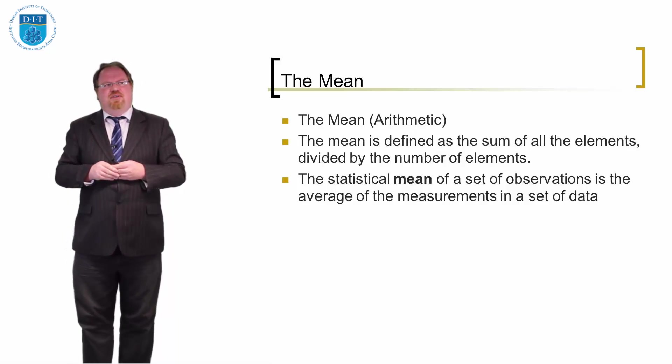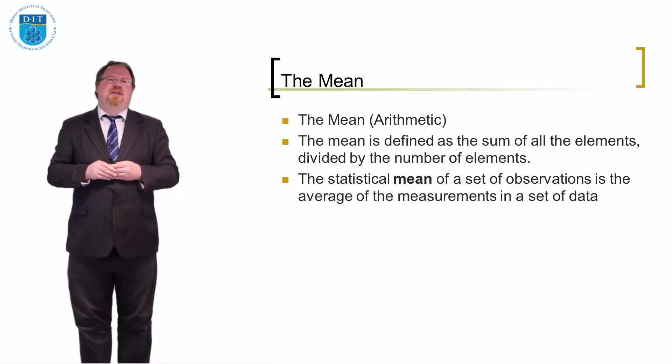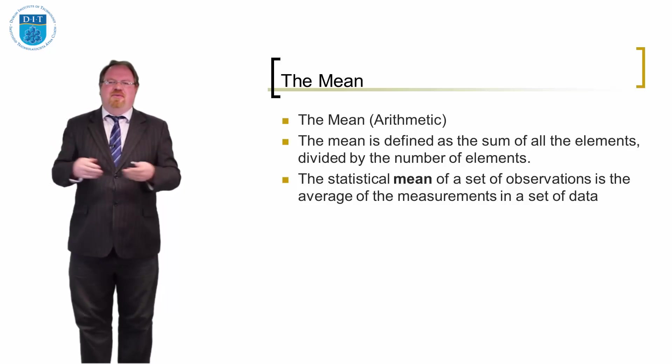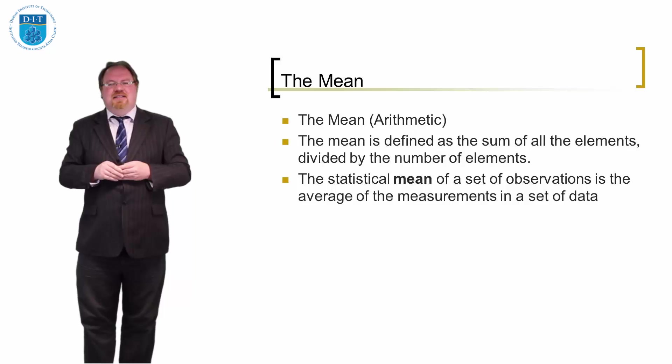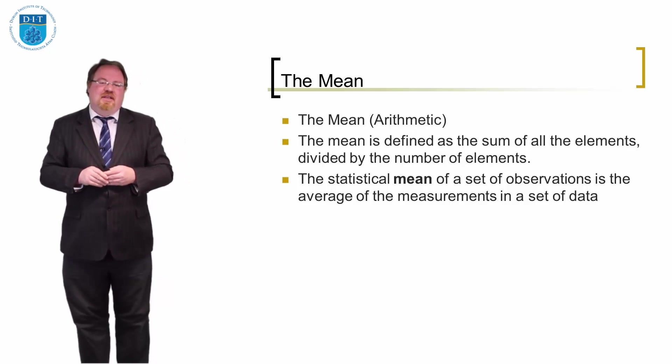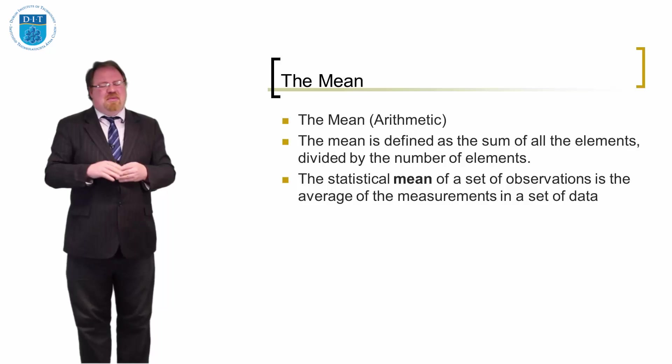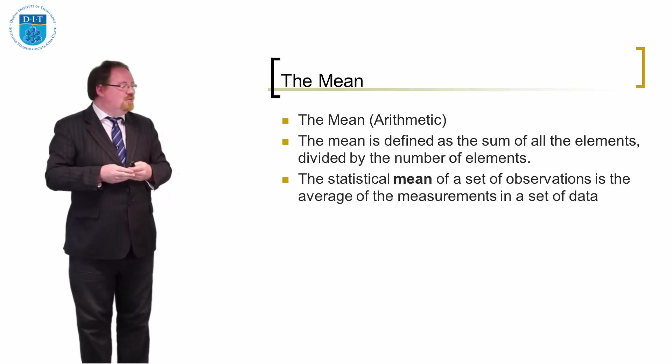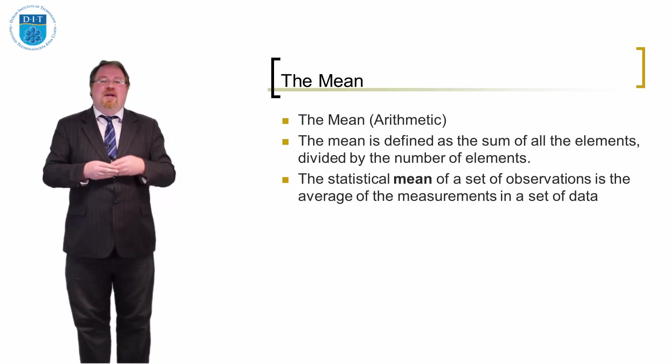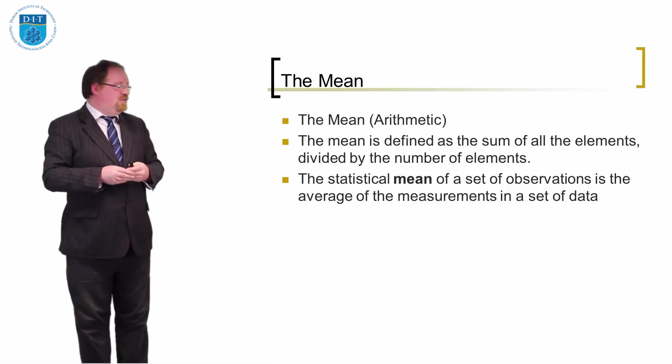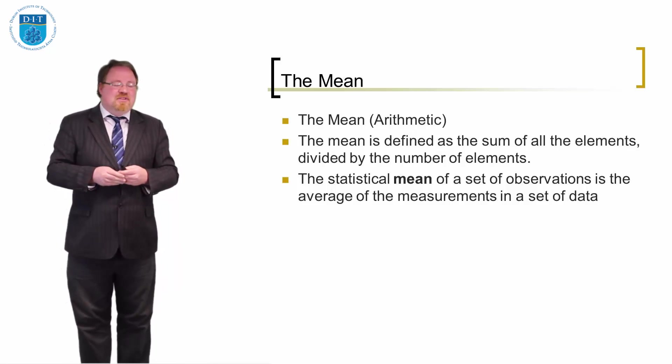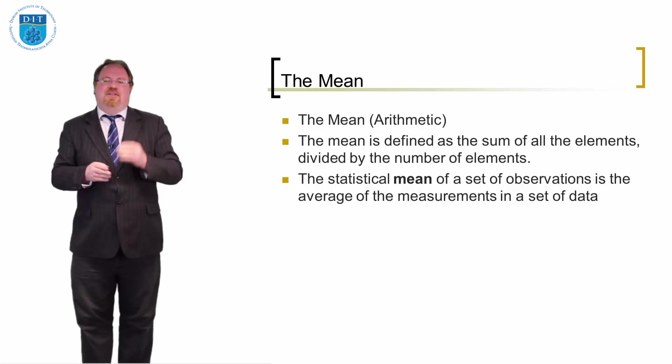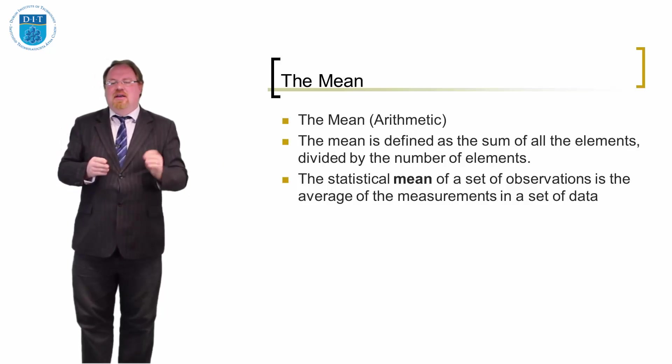I want to think about definitions around the term average now. When we use the term average, typically what we mean is if we have five numbers and we add them up and then divide by five, that's typically what we mean when we talk about average. That's probably an incorrect term though. That is, technically speaking, the mean. If we add up five numbers and divide by five, we're getting the mean of those five values. More specifically, we're getting the arithmetic mean because we're adding them up and dividing by the number.